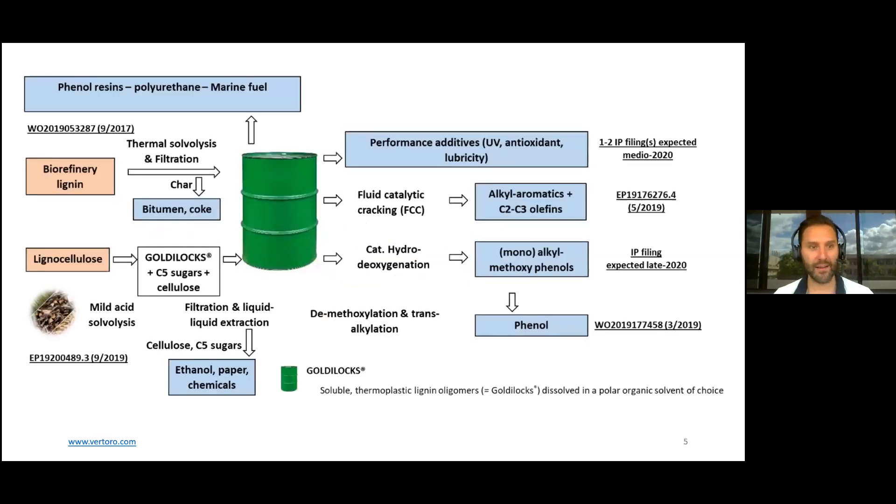On this slide, I have our technology portfolio, which includes IP and product-market combinations. Goldilocks was our first technology. Here we take biorefinery lignin, or Kraft lignin works just as fine, and subject it to a thermal solvolysis reaction, which is essentially cooking the lignin in a polar solvent. It could be methanol, ethanol, phenol, polyols, depends on what we want to make in the end. At about 200 degrees for 10 to 20 minutes.